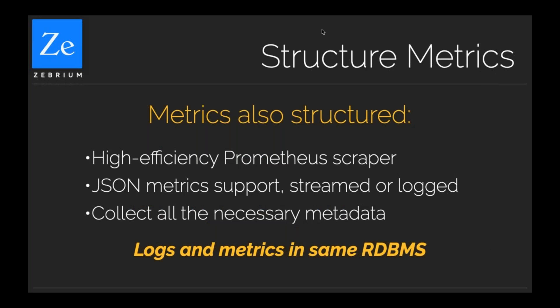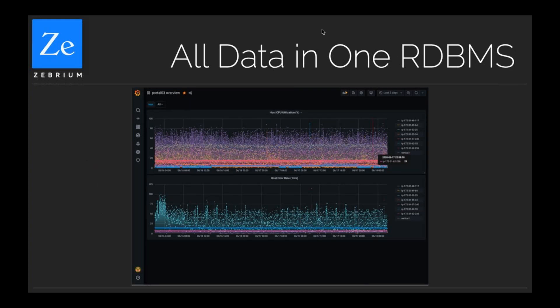We support JSON metrics and log streams that contain metrics. The most important thing is that we collect all the necessary metadata to structure everything into tables, so logs and metrics are in the same relational database. That gives us the power to do analytics quickly and pick out when there's a new type of issue. Once you have all that data in one place, it's easy to create dashboards — we support Grafana and all of that.